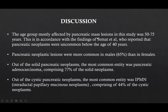The age group mostly affected by pancreatic mass lesions in this study was 50 to 75 years, which is in accordance with the findings of Jamaat et al., who reported that these were uncommon below the age of 40 years. Pancreatic neoplastic lesions were more common in males. The most common solid neoplasm was pancreatic adenocarcinoma comprising 77%, and the most common cystic neoplasm was IPMN comprising 44% of cystic neoplasms.